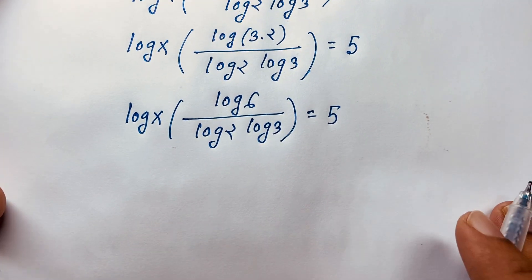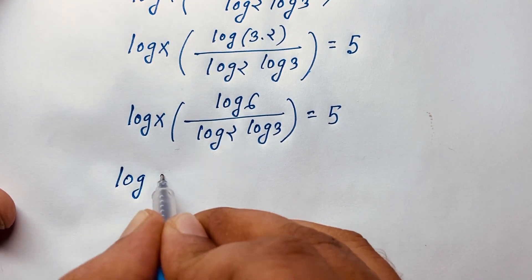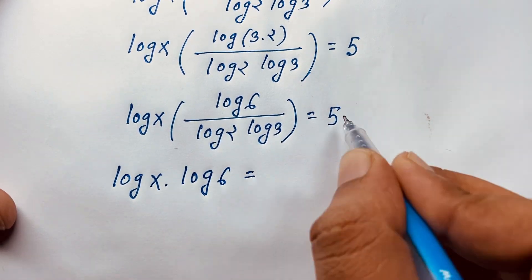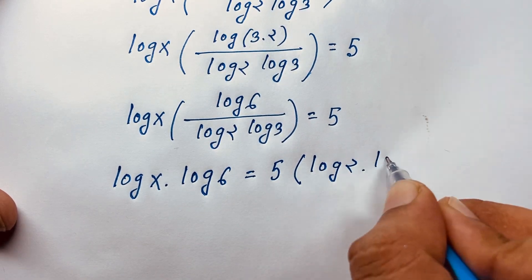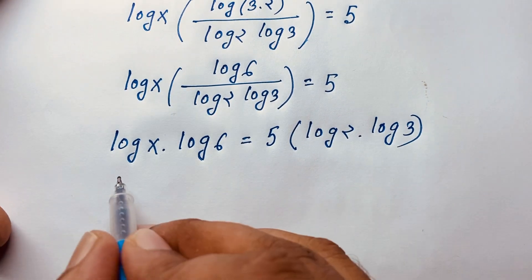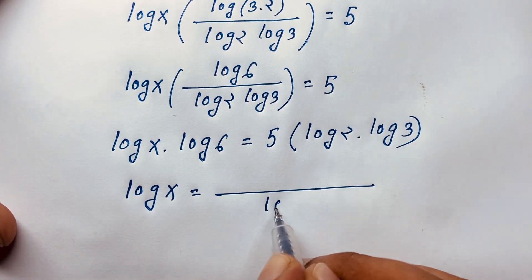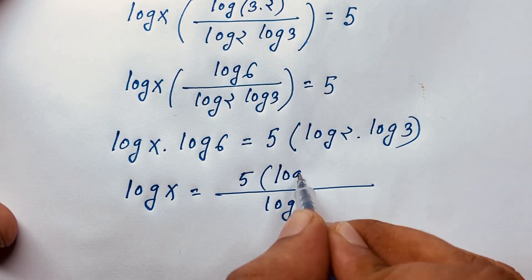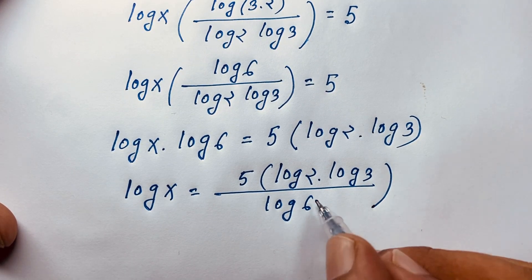Now I can see this expression: log x times log 6, and this equals 5 times log 2 times log 3. If I divide both sides by log 6, we find log x is equal to 5 times log 2 times log 3 over log 6.